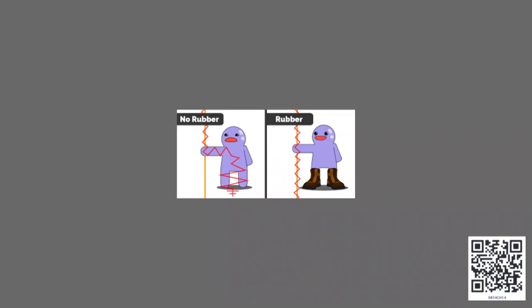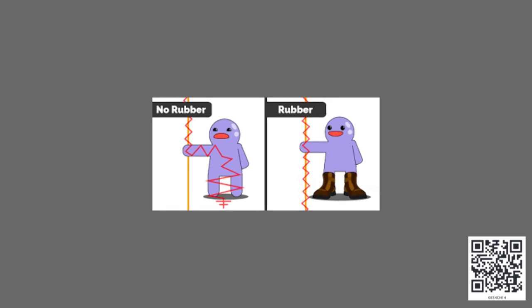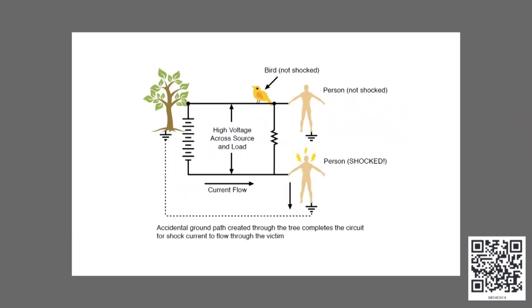Your parents or elders might have cautioned you about not touching switches when your hands are wet, or to wear slippers while handling electrical devices. You may also have heard of unfortunate instances of people getting electrocuted near electric poles while it was raining. In those cases, the human body acted as a good conductor of electricity. The same reason applies to wet hands. Wearing chappals — usually made of rubber, which is not a good conductor — prevents current from passing through the body.